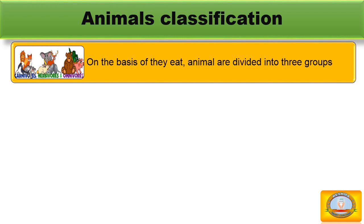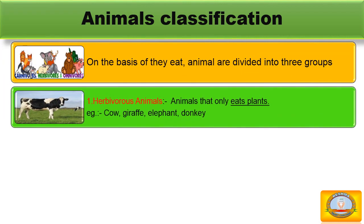Let's see the first one: Herbivorous animals. Animals that eat only plants are called herbivorous animals. Examples: cow, giraffe, elephant, donkey.